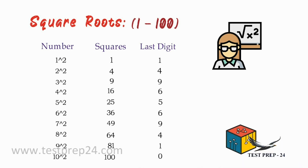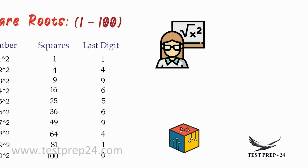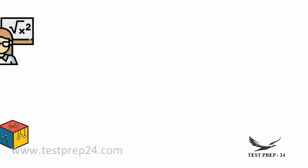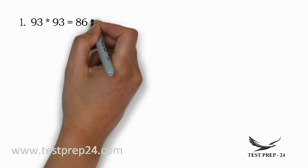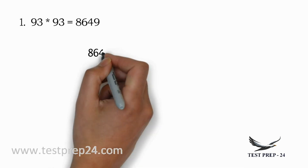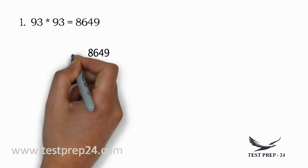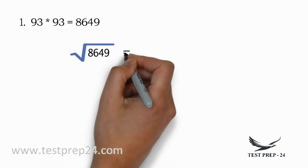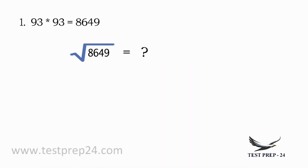With the help of this table we can find the square root of any number between 1 to 100. Let us take an example — the number 93. 93 × 93 = 8649. Now if you have a question where you want to find the square root of 8649, how can you find it easily?